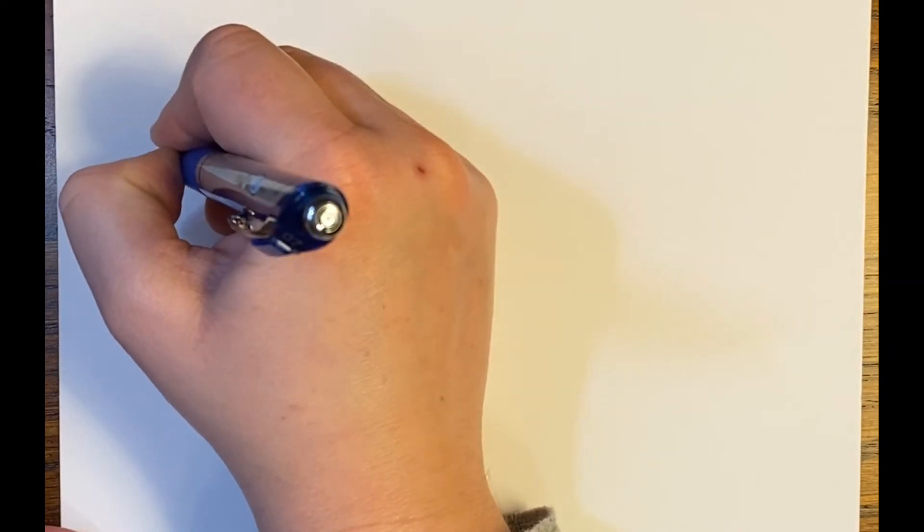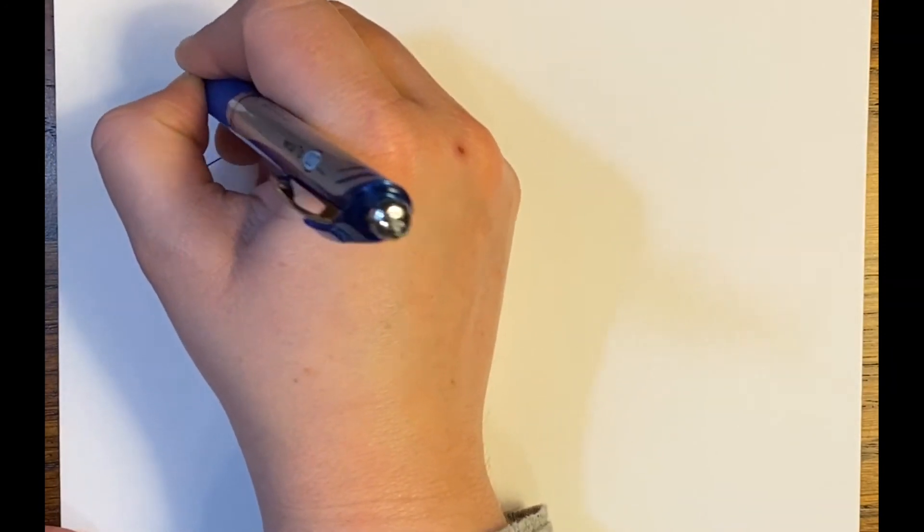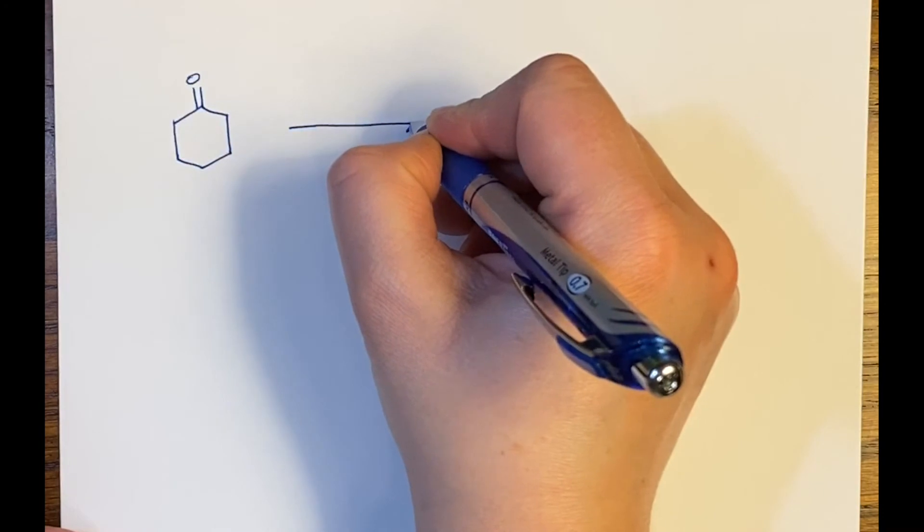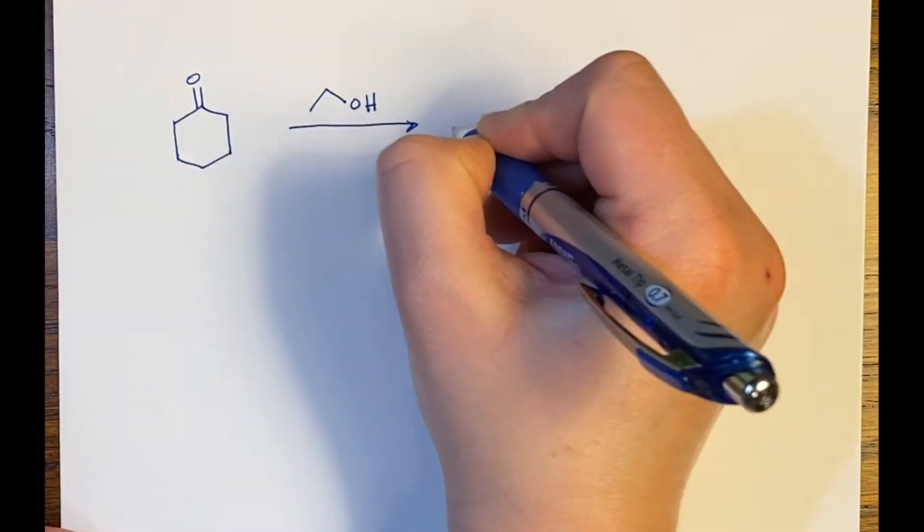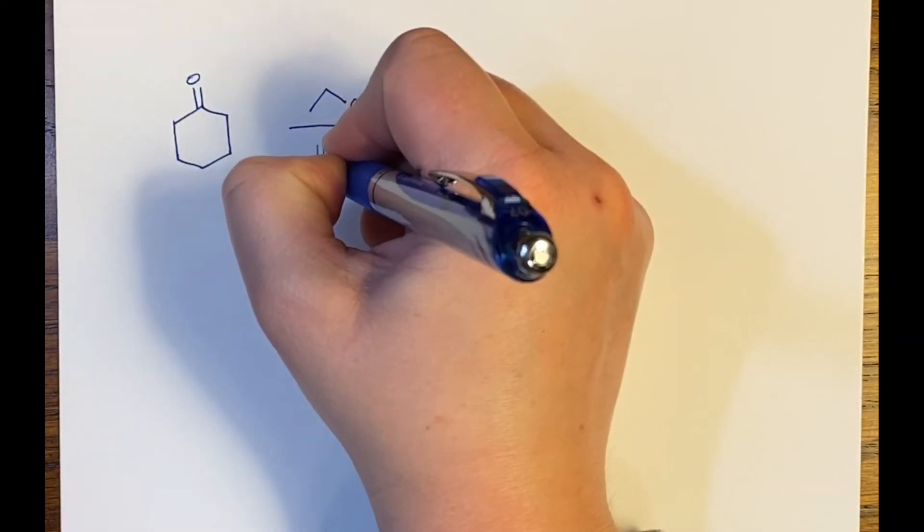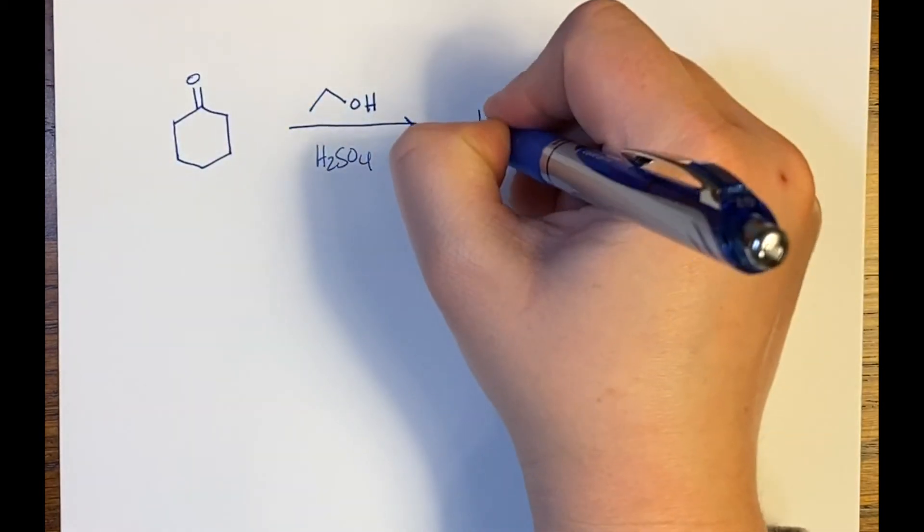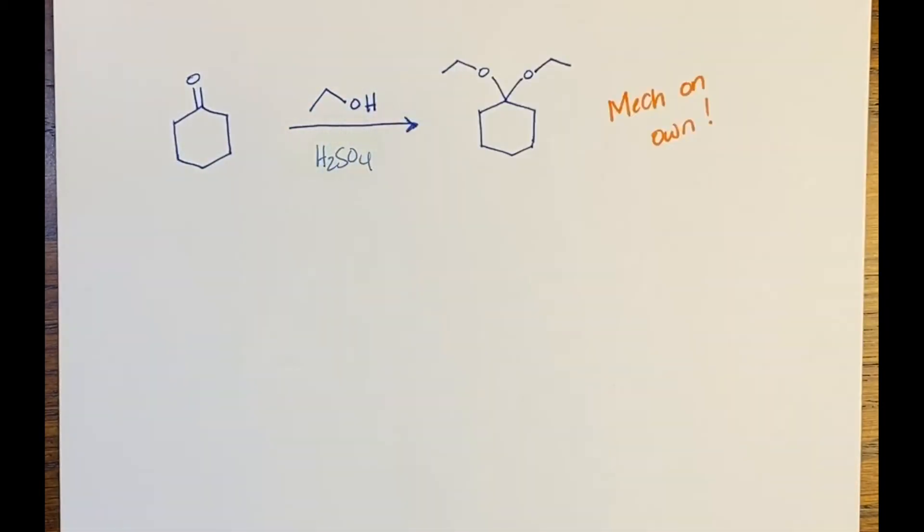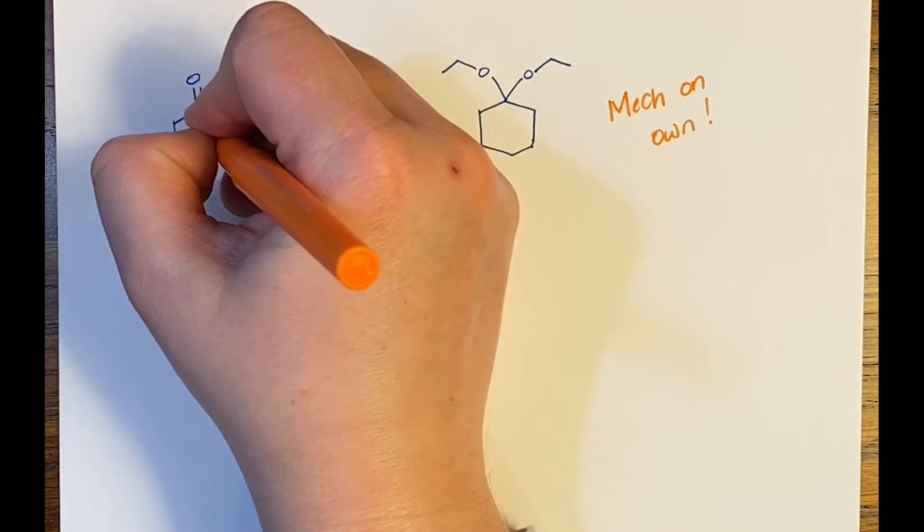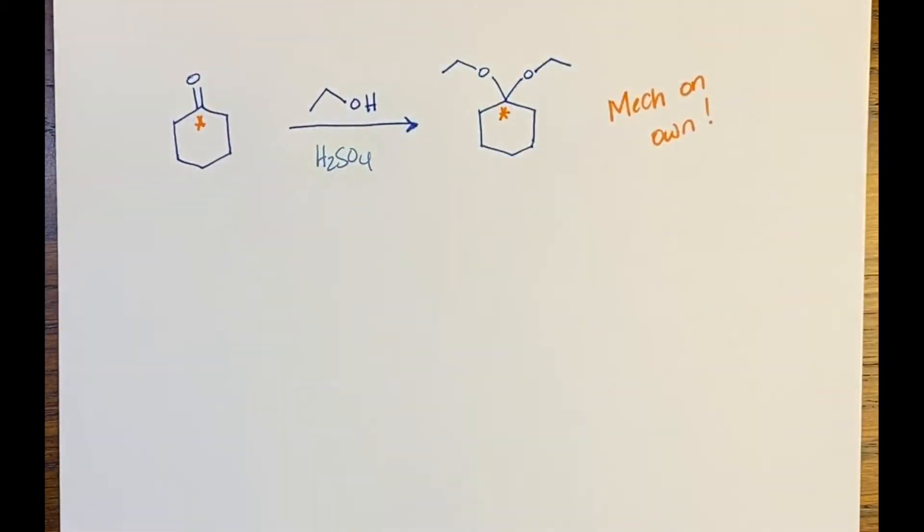So you should be able to work through the mechanism for the formation of a ketal like the one on the previous page that we looked at. You should also be able to look at a mechanism like this one, where we have a cyclic ketone in the presence of a molecule of ethanol and sulfuric acid in order to make a ketal that looks like this. Make sure you go through this mechanism on your own. All of the chemistry happens at the carbon of the carbonyl as you go throughout the entire mechanism.